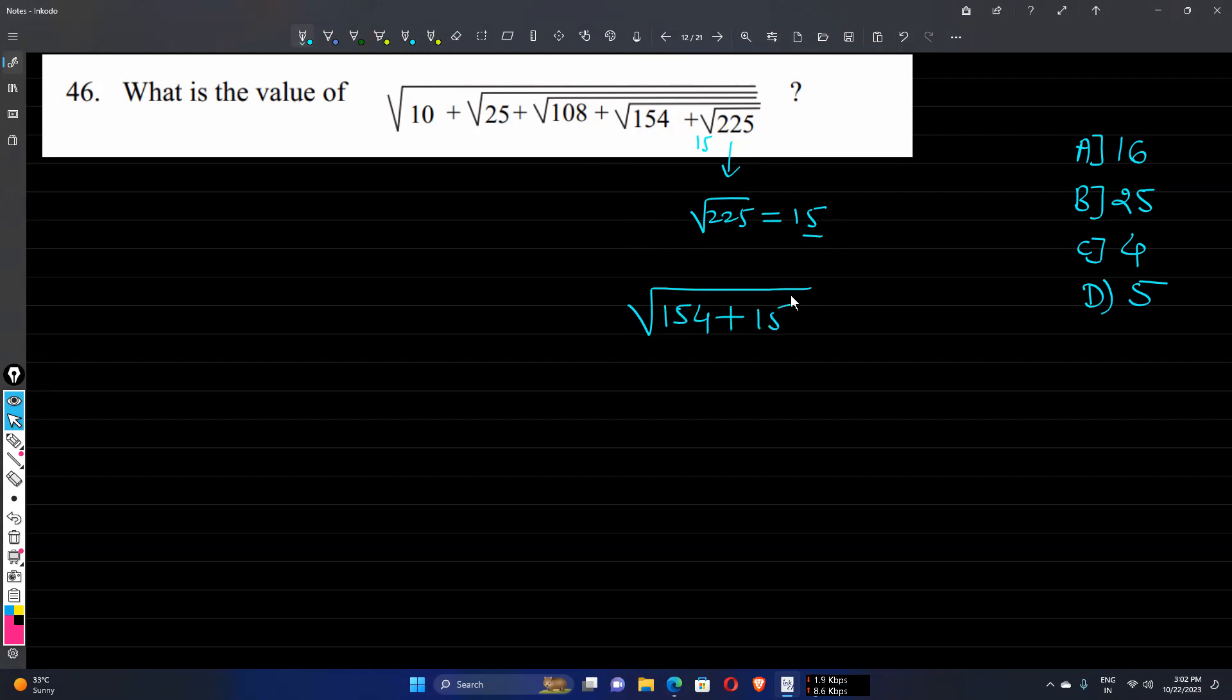Don't forget this 15 we have written instead of √225. This will give us √169, which is again equals to 13, since 169 is the square of 13. So instead of these two terms, we will write 13.